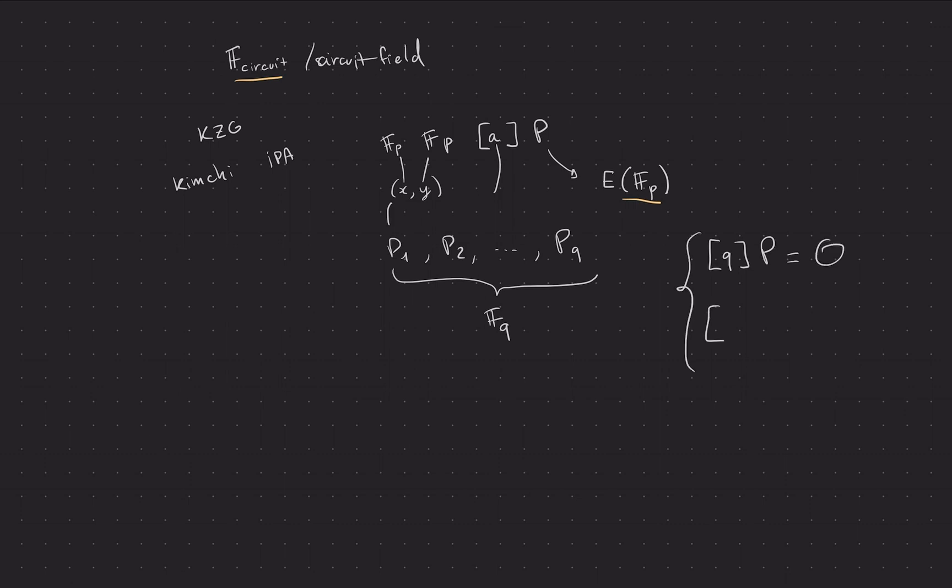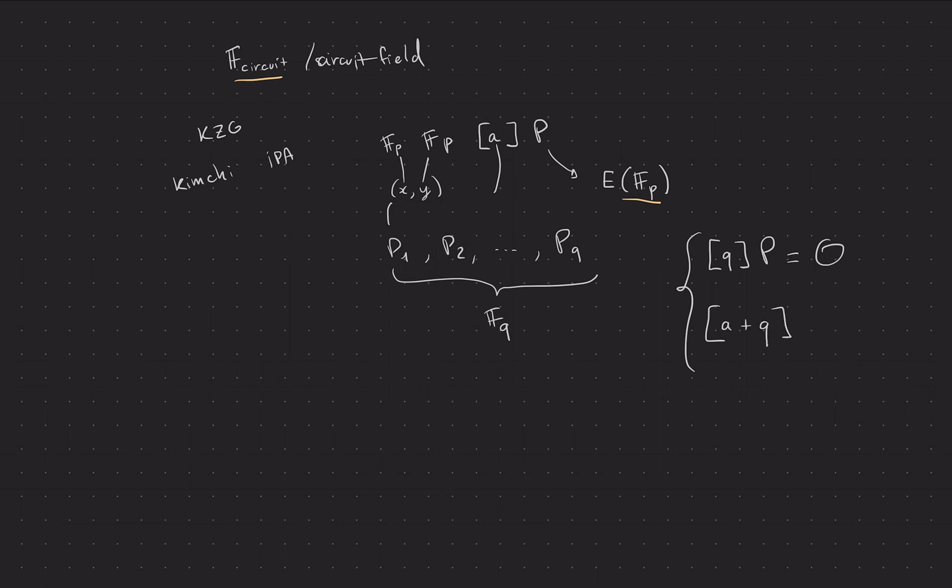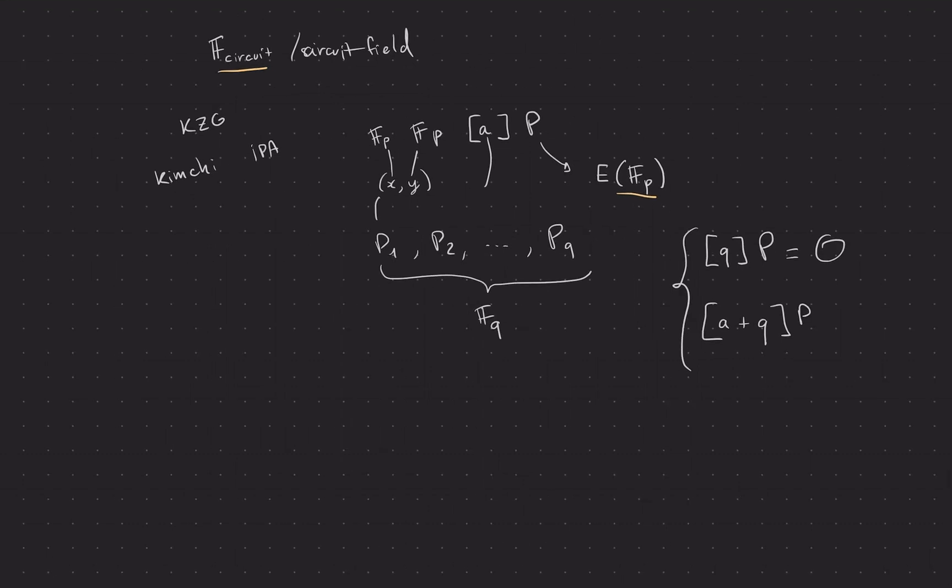If you do any number plus q, so that's the order of our elliptic curve, then you'll get back a times p. And so we have these rules where everything works modulo q, so we're in a field q. And so that's why we call it the base field. Or maybe you can call that the proof field, but it's really called the base field. So these are the differences. We have the circuit field and the base field.